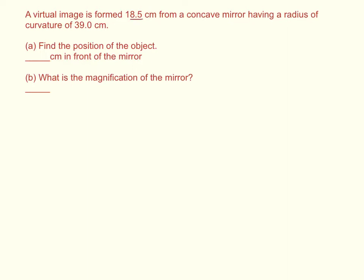So it gives me the position of the image, so it gives me Q, and it tells me the radius of curvature, R. So I have Q and R, I just use my mirror equation, 1 over P plus 1 over Q equals 2 over R.